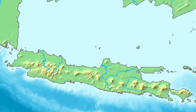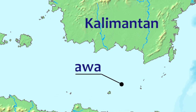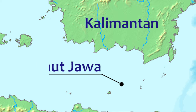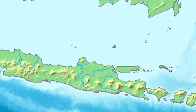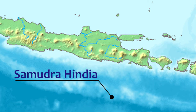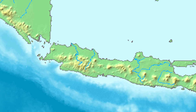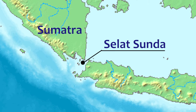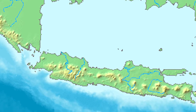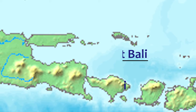Batas-batas Pulau Jawa: Utara, Laut Jawa dan Pulau Kalimantan; Selatan, Samudera Hindia; Barat, Selat Sunda dan Pulau Sumatra; Timur, Selat Bali dan Pulau Bali.